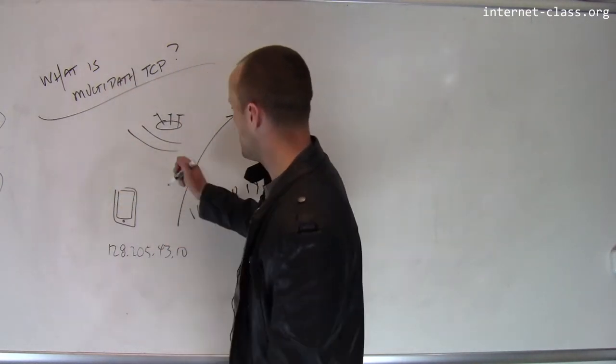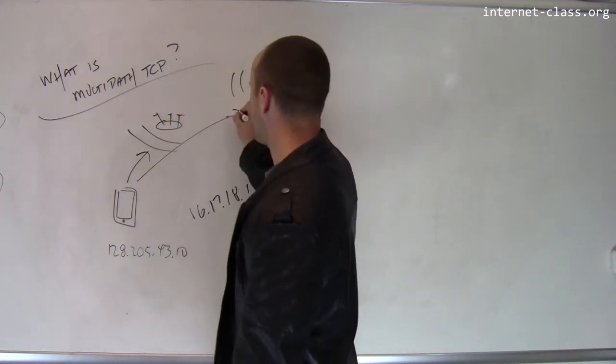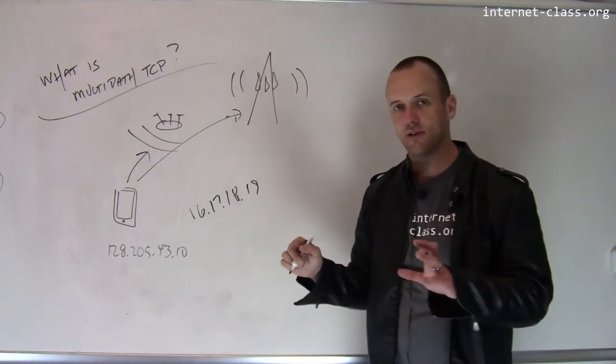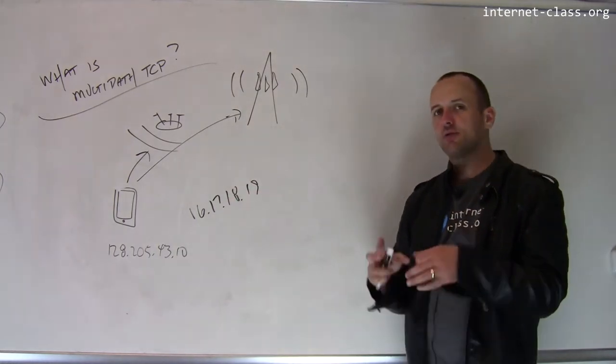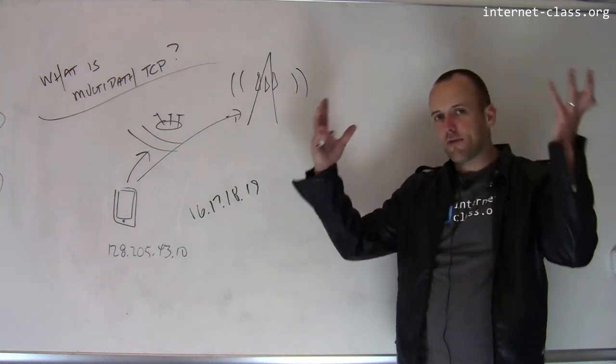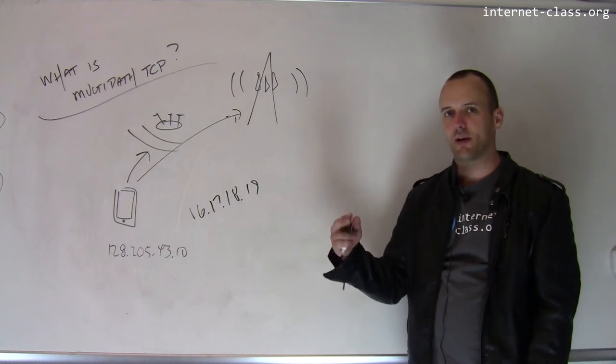And what Multipath TCP does is it allows one device to use, this is called multi-homing, simultaneously two different connections, combine them together at the transport layer into a stream that higher level protocols can use without having to worry about the details of how the stream is actually assembled.